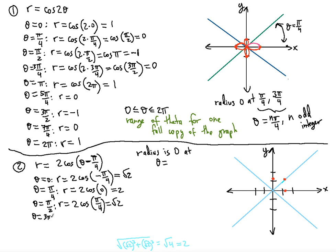At θ = 3π/4: r = 2cos(3π/4 - π/4) = 2cos(π/2) = 0. We're at the origin — that's one full copy of the circle. Checking θ = π: r = 2cos(π - π/4) = 2cos(3π/4) = -√2. Since the radius is negative, we go in the opposite direction, winding up back at the starting point. This confirms a complete circle.